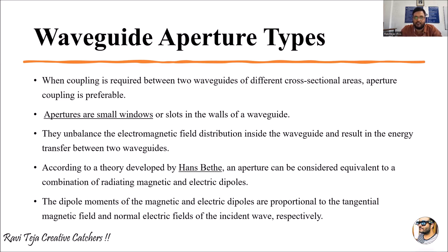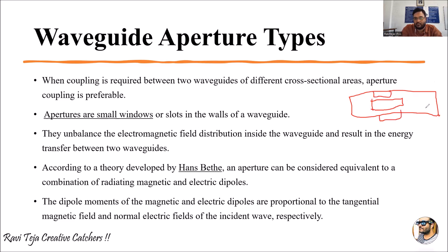What are these apertures? These are nothing but small windows, or we can say small cuts. If you consider a waveguide, small cuts at the side of the waveguides or on the top or the bottom of the waveguides — small cuts, small gaps, or slots in the walls of the waveguides — can be considered as apertures.